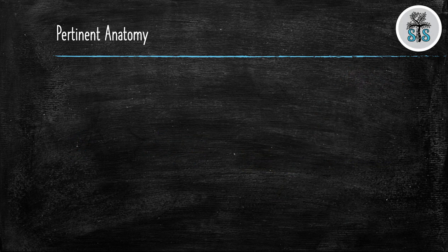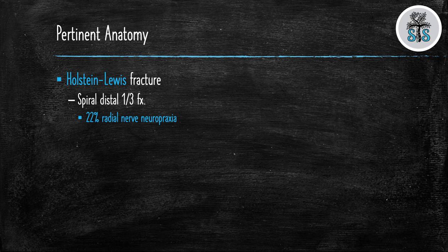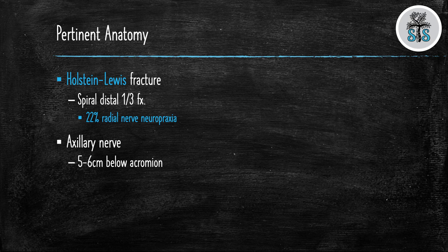Do you know what a Holstein-Lewis fracture is? A Holstein-Lewis fracture is a spiral distal third humeral shaft fracture with a radial nerve palsy. Spiral distal third humeral shaft fractures have a 22 percent incidence of radial nerve neuropraxias.